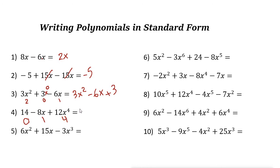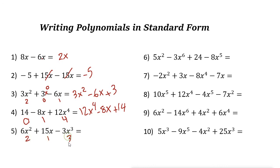Next one: the degree here is 0, the degree here is 1, and the degree here is 4. So the standard form is 12x to the power of 4 minus 8x plus 14. The next one has degrees 2, 1, and 3, so the standard form is negative 3x cubed plus 6x squared plus 15x.